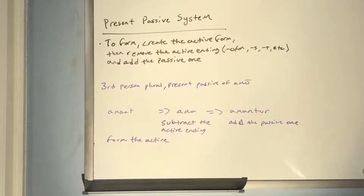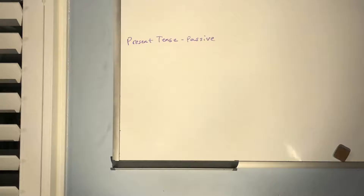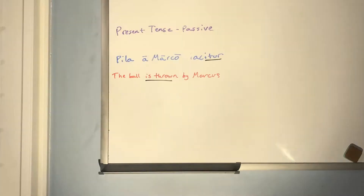Now I'll go through each of the three tenses in the present passive system, noting the exceptions, and then conjugate a verb into the passive voice in all four conjugations. Starting with the present tense: the sentence 'Pila a Marco iaciatur' translates as 'the ball is thrown by Marcus.' If it were active, it would be 'Marcus throws the ball.' Since it's passive, we use the 'is verbed' translation.